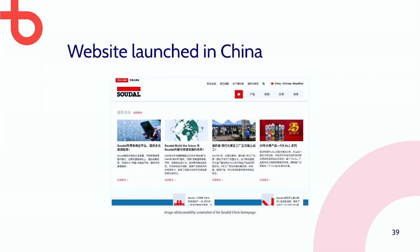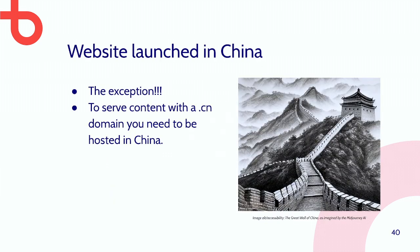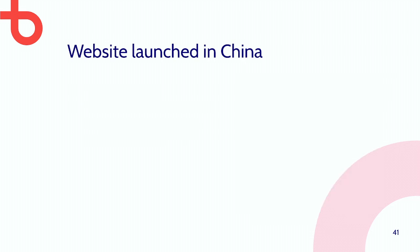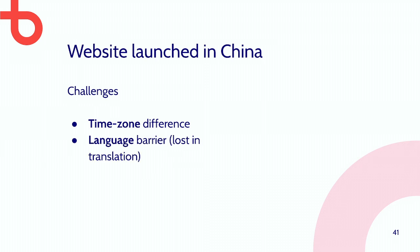Then we have the exception: Sudol China. In order to serve a .cn domain, the server needs to be hosted in China, but we have the platform centralized. We had some challenges: the time zone difference — we had a three-hour window, and discussions often pushed to the next day. There was also a language barrier because we translate a lot of content and emails get bigger going back and forth.